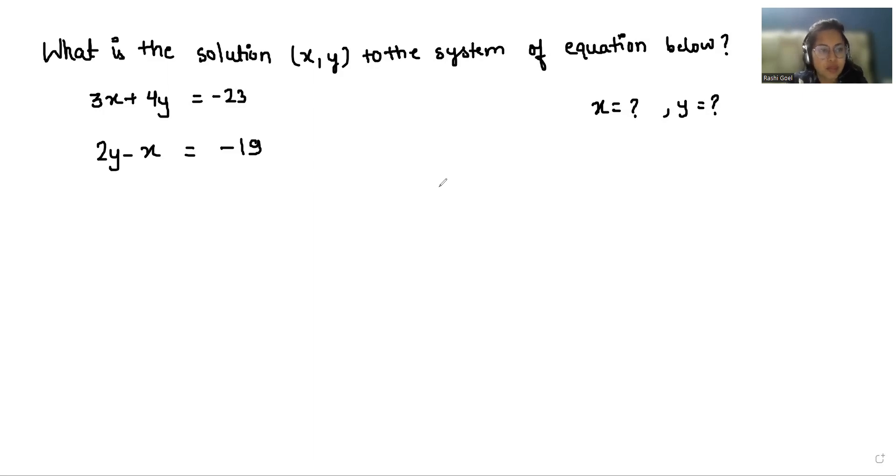So our first equation is 3x plus 4y is equals to minus 23 and 2y minus x is equals to minus 19 and we have to find the value of x and y.